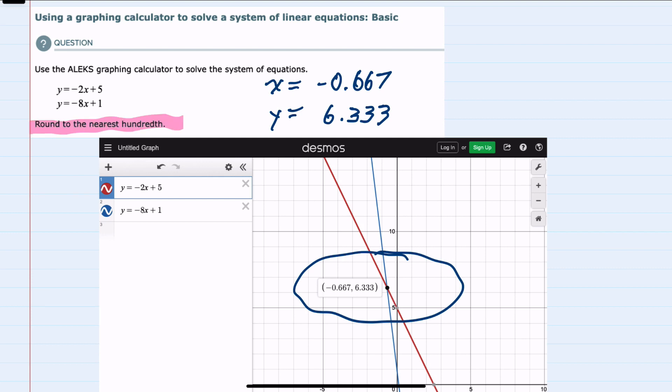However, since we are rounding to the nearest hundredth, the hundredth place in our x value, in rounding we would look behind that space at the 7 and use that to round the 6 in the hundredth place up to a 7. So this would be a negative 0.07 for my x value.